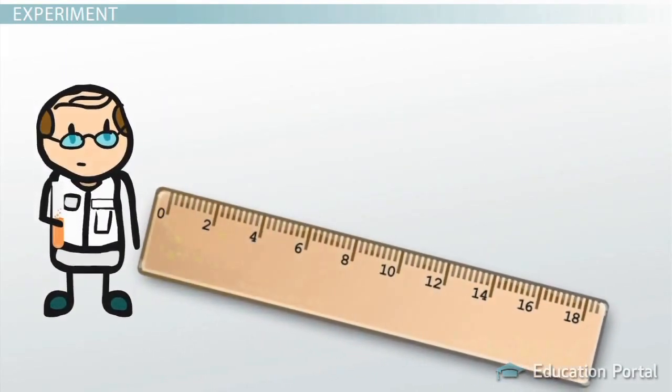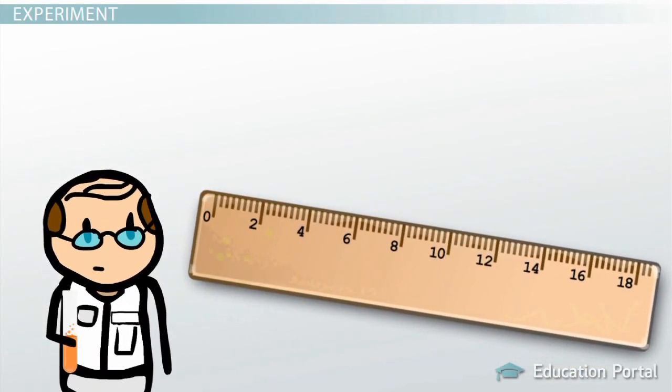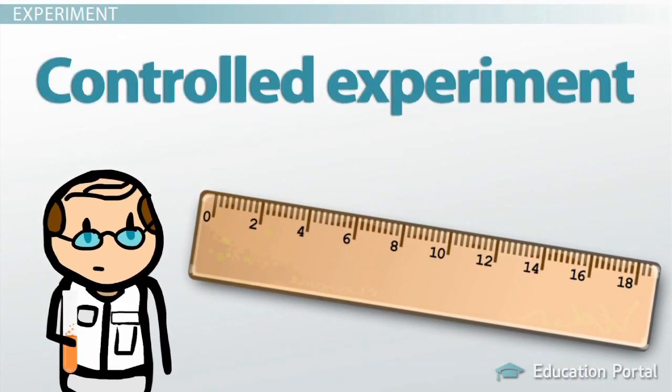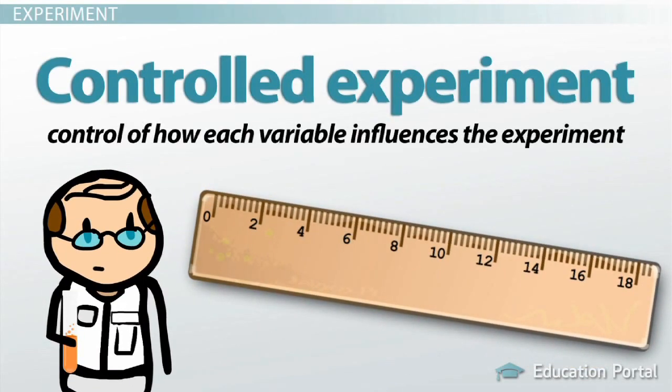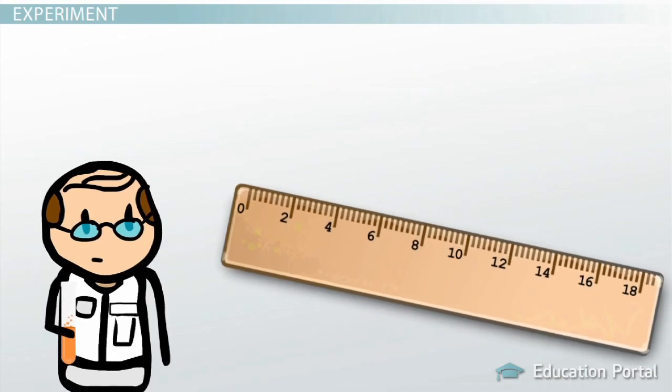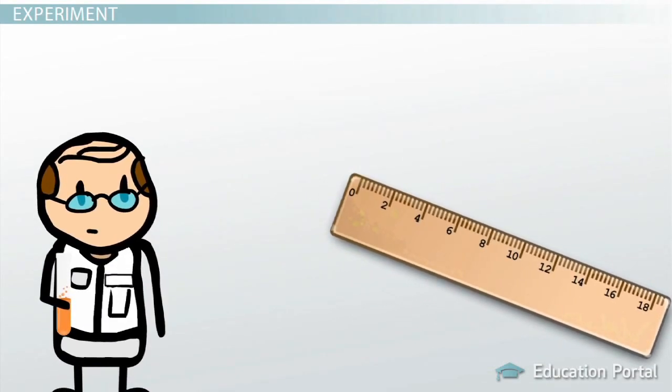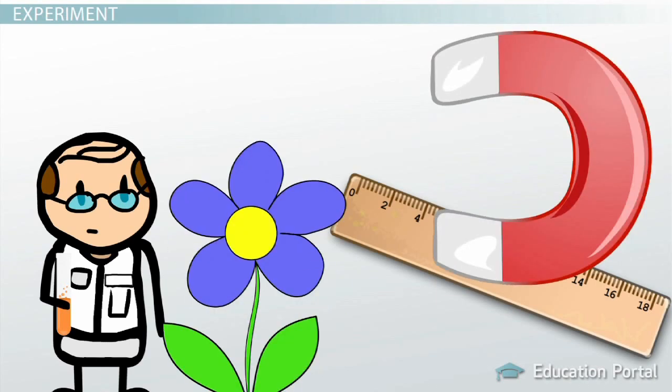When an experiment includes these aspects, it is referred to as a controlled experiment, because the scientist is in control of how each variable influences the experiment. This is an important part of the scientific method, because by controlling the variables in the experiment, the scientist can determine which variable is causing the predicted result.